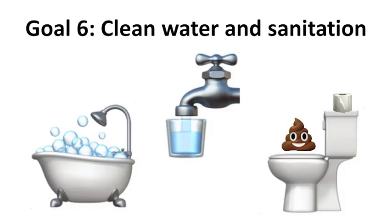Sustainable goal number six is clean water and sanitation. It is to ensure availability and sustainable management of water and sanitation for all. There are six outcome-oriented targets, and they include safe and affordable drinking water, ending of open defecation and providing access to sanitation and hygiene, improved water quality, wastewater treatment and safe reuse, and increased water use efficiency and ensuring fresh water supplies, and implementation of integrated water resources management.